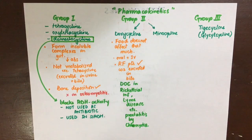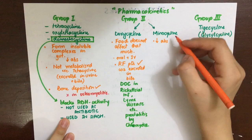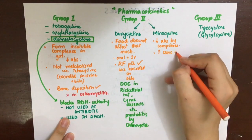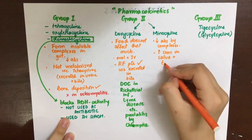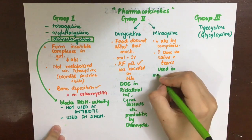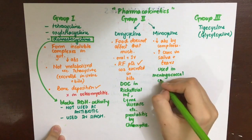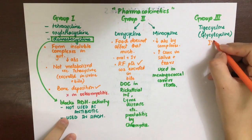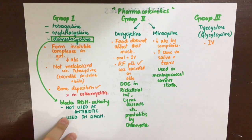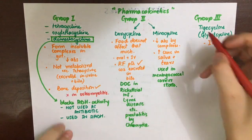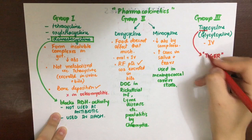Minocycline's absorption is also decreased by chelation complexes. Generally, it is advised not to take any tetracyclines with food or dairy products unless there is stomach irritation. An important feature of minocycline is that it reaches high concentrations in saliva and tears. Since meningococcal bacteria colonize the nasopharynx and can be transmitted via saliva and tears, minocycline can be used to eradicate the meningococcal carrier state.